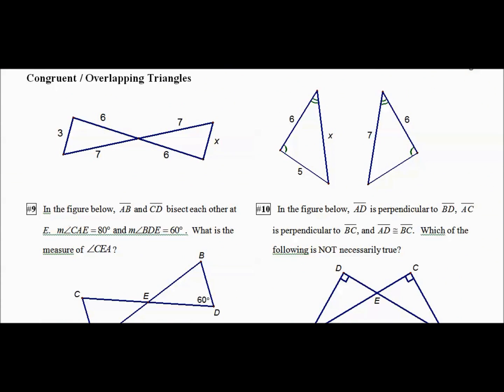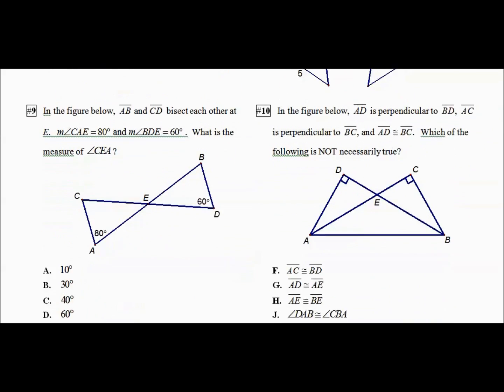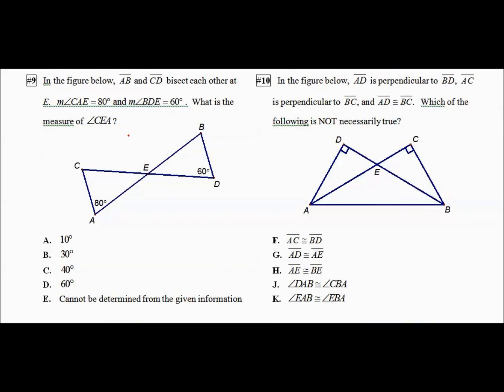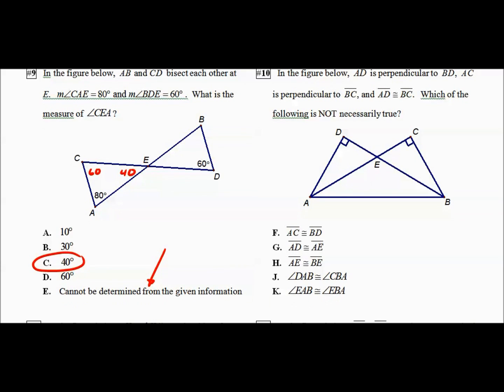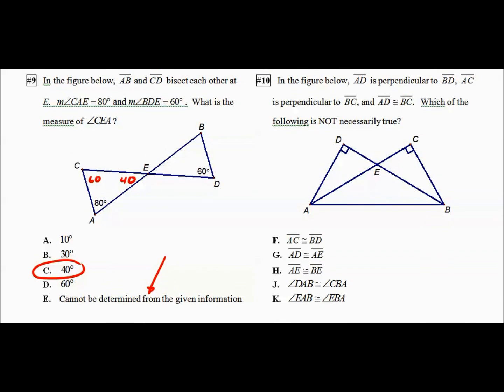The ACT math test has this weasel statement saying, illustrated figures are not necessarily drawn to scale. That's nonsense. They are. If it looks like it's the same, hey, this looks like 3, it's 3. Hey, this looks like 7, it's 7. So when you look at them, you can say, oh, this is getting me to side angle side. I don't care. I know this is going to be 60. Therefore, this has to be 40. Cannot be determined. Extremely rarely used. I've seen it twice now out of a lot of questions I've looked at. So I would not ever pick it unless I was very sure.